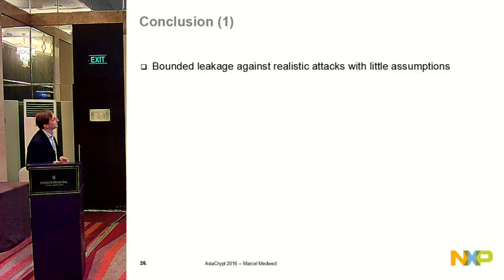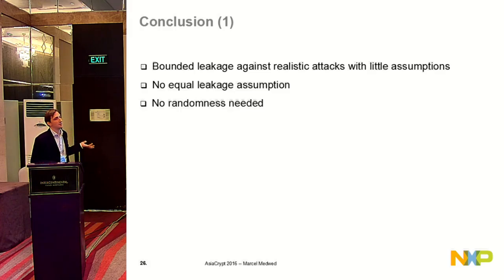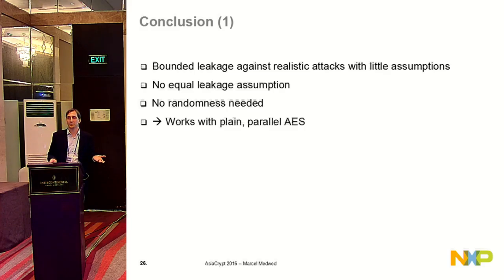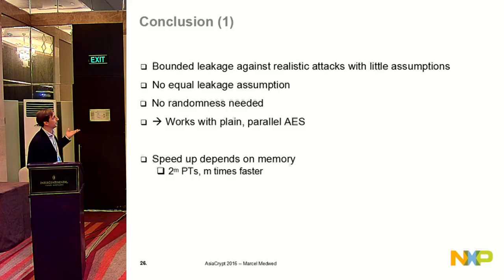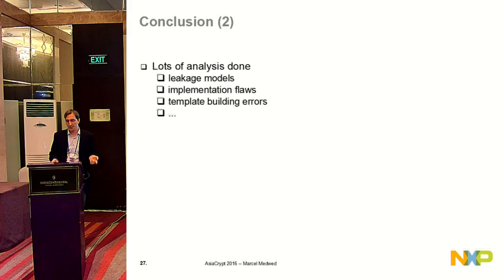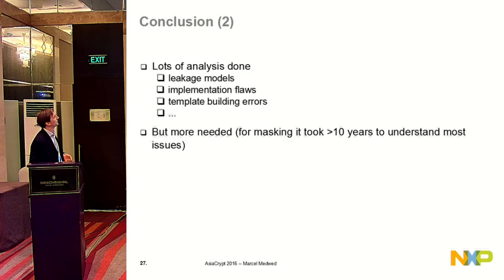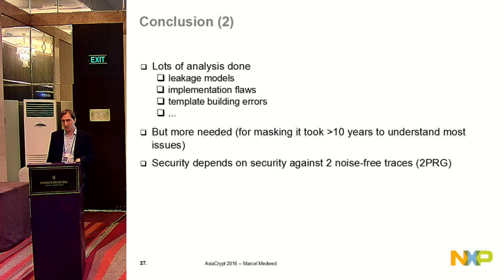In summary, we presented a leakage resilient PRF with bounded leakage under practical assumptions. We have fewer assumptions than previous constructions: no equal leakage assumption, no randomness needed for the countermeasure, and it works with a plain parallel AES implementation. The speedup-memory tradeoff is not ideal — M times speedup requires 2^M memory — but for M equals 4 or 8 it's still acceptable. We ran many more experiments varying leakage models and implementation flaws, getting positive results. But it's a new approach that needs much more analysis — masking has been studied for more than 10 years. The weakest point is the generation of the secret plaintexts, which needs careful attention.